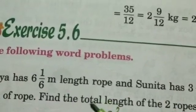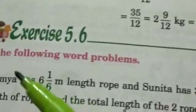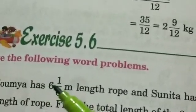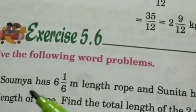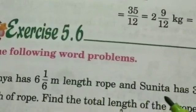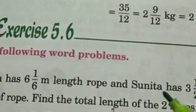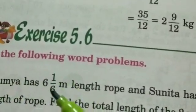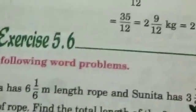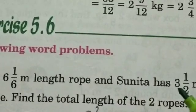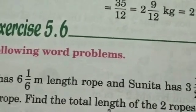So here total is written. That means you need to add the length of the rope which Soumya has and also the length of the rope that Sunita has. That means we have to add 6 1/6 meter with 3 and a half meter. So how are you going to do this? Let's see.